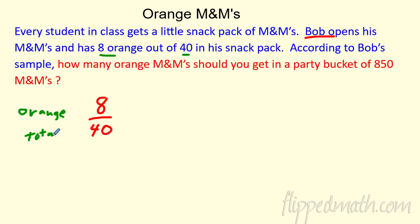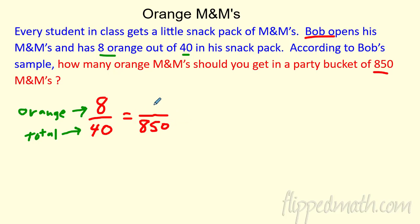We're going to do a couple of proportions. As long as you're consistent — orange M&Ms on top, total M&Ms on bottom — then it's cool to say: in a party bucket, I know I'm going to get 850 M&Ms. Do I know how many will be orange? If we use Bob's ratio, we'll get a nice approximation. So we set it up: orange on top, total on bottom — we are totally cool.